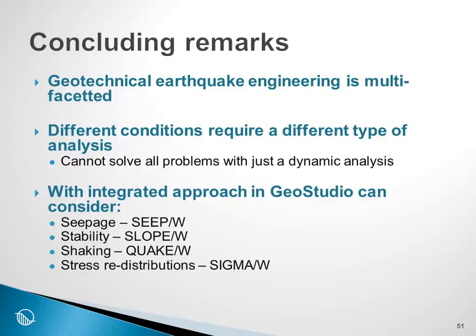The key points about this introductory session on QuakeW and earthquake engineering in GeoStudio are that geotechnical earthquake engineering is multifaceted. There are many aspects to this, and different site conditions require different types of analysis — we cannot solve all the problems with one dynamic analysis. GeoStudio makes this possible with its integrated features: we can use SeepW, SlopeW, QuakeW, and SigmaW all together to look at the multiple facets involved in earthquake engineering when examining permanent deformation.